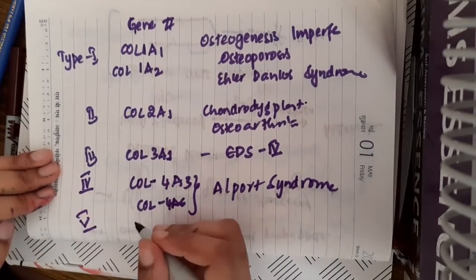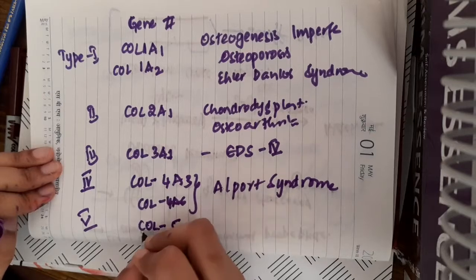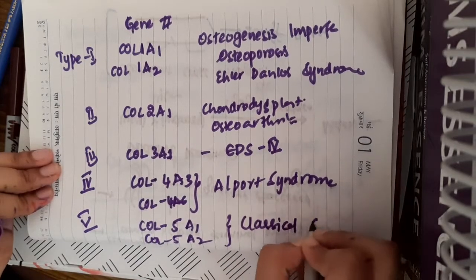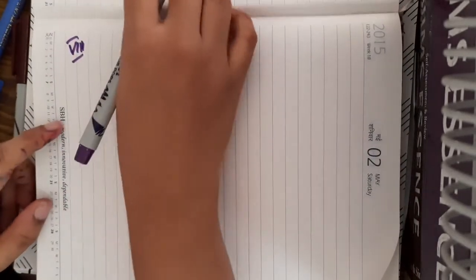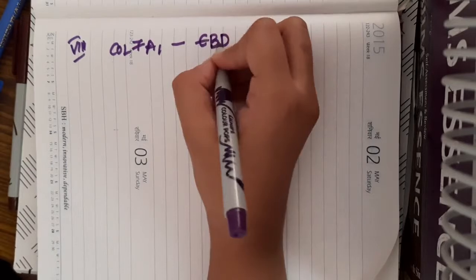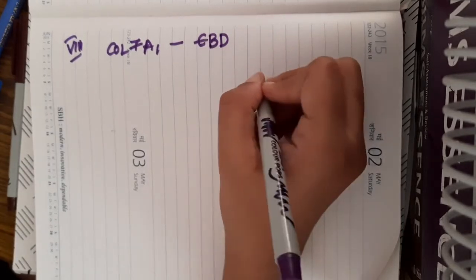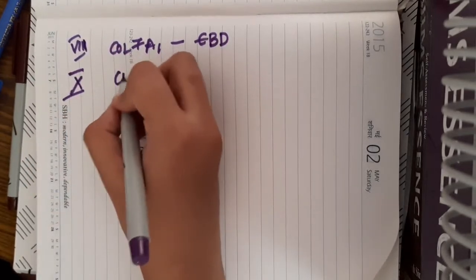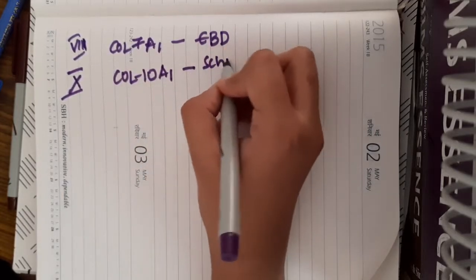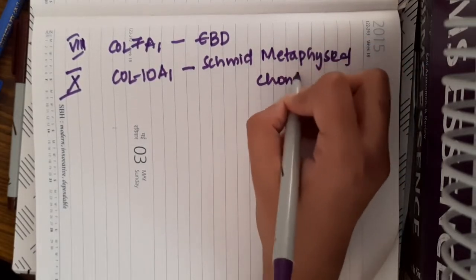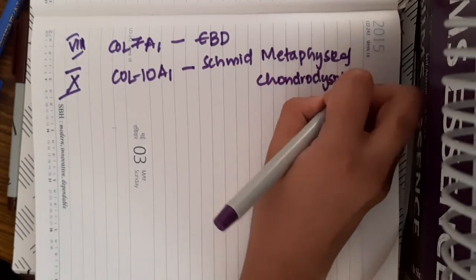Defect in type 5 collagen which is due to the defect in COL5A1 and COL5A2 genes results in classical Ehler-Danlos syndrome. Then, defect in type 7 collagen which is due to the defect in COL7A1 results in epidermolysis bullosa dystrophicans, which is a dermatological disorder. Then, defect in collagen type 10 due to COL10A1 results in Schmid metaphyseal chondrodysplasia.